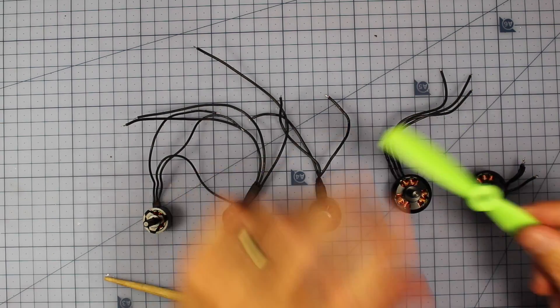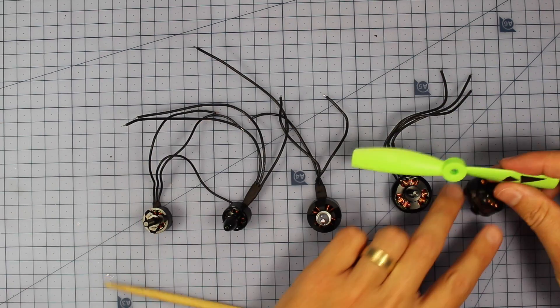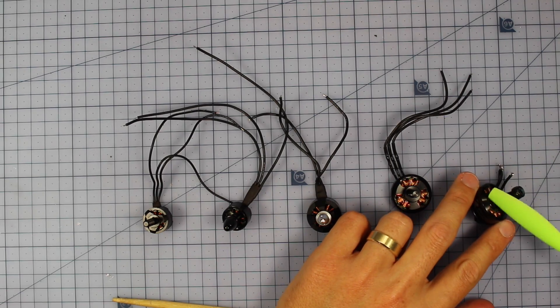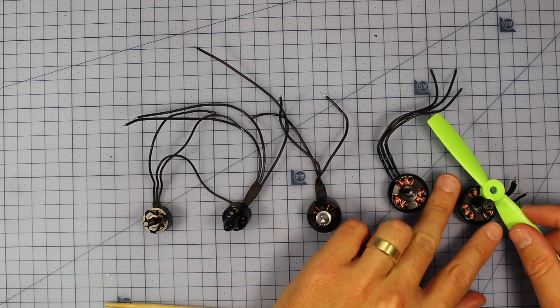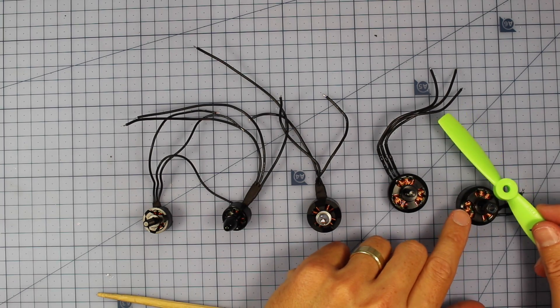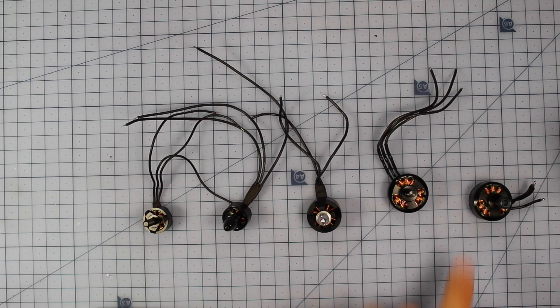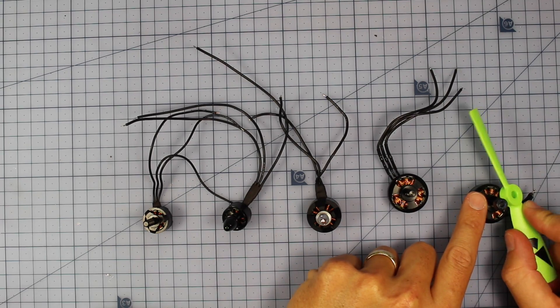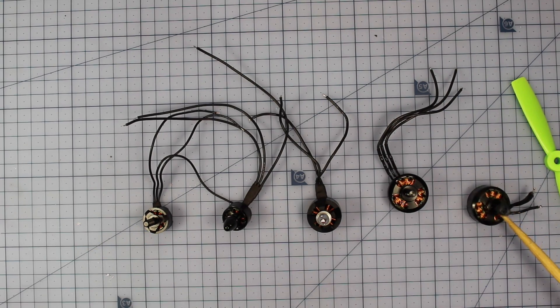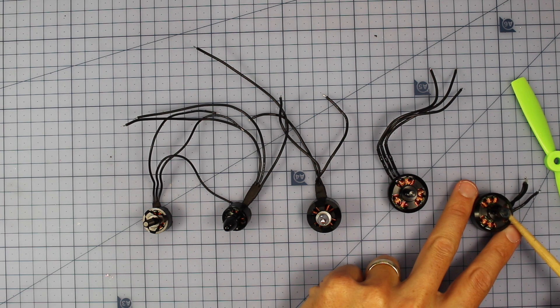On the other hand, if you put this 5 inch bullnose prop on this 2100 2205 motor, this would probably be under propped. This motor, because it has a lower KV and also it is a lot larger than this little motor, it's going to be able to spin these props very easily.